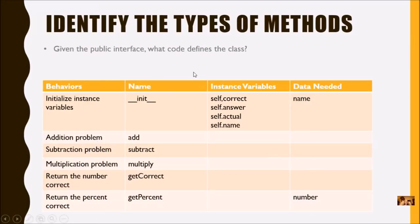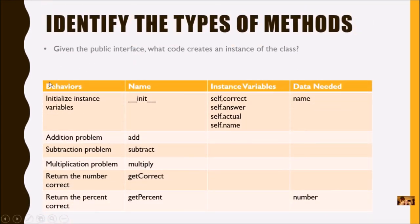Now let's answer more questions based on the public interface. Given this public interface, what code would define the class? We know this is our MathTutor class, so the class definition would look something like this. What code creates an instance of the class? I need a name for my object — something like player_one equals MathTutor with parentheses. If you forget the parentheses, it won't give you an error but it won't give you a class either.